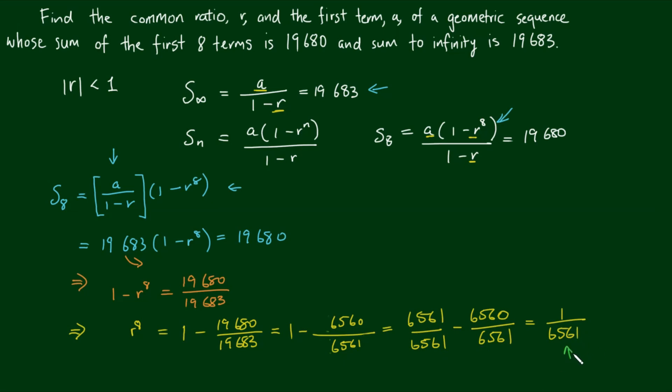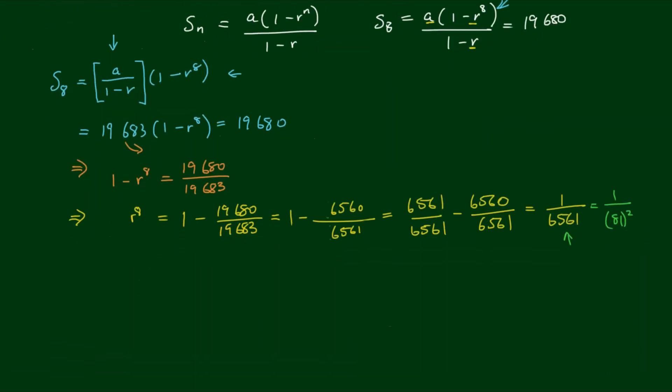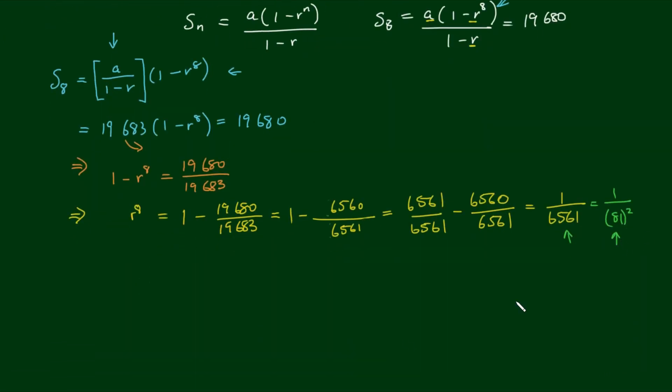Now this 6561 can be written as 81 squared. So this fraction is equal to 1 on 81 squared. This 81 can be written as 9 squared. So we have 1 on 9 squared all squared, which we can rewrite as 1 on 9 to the 4th power.